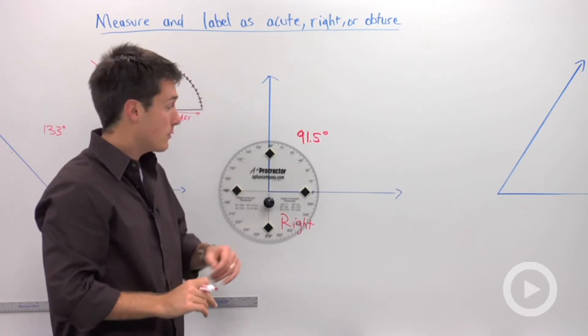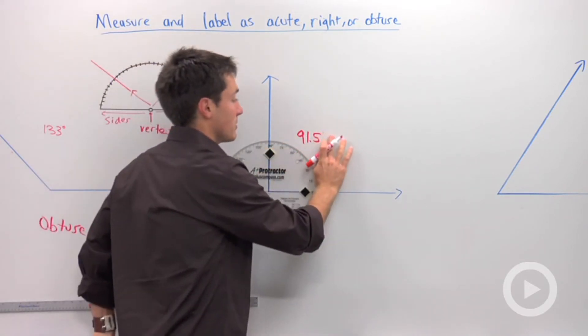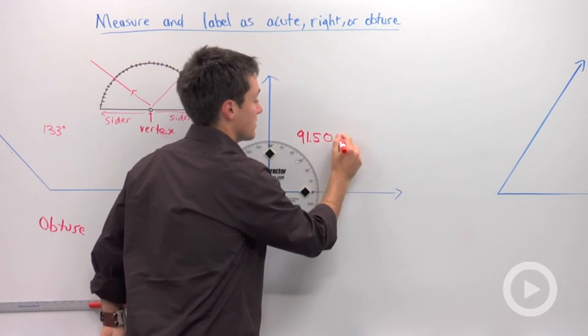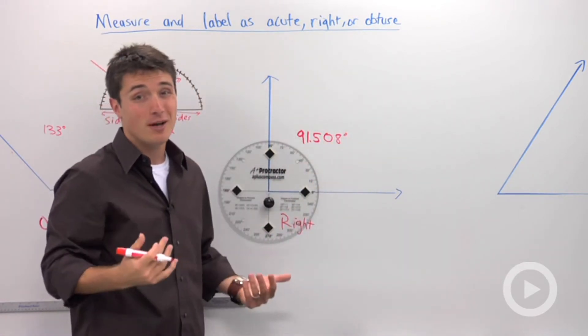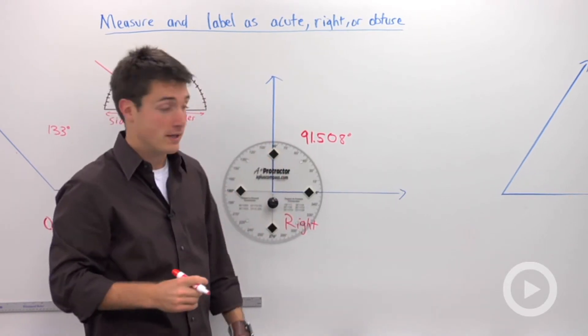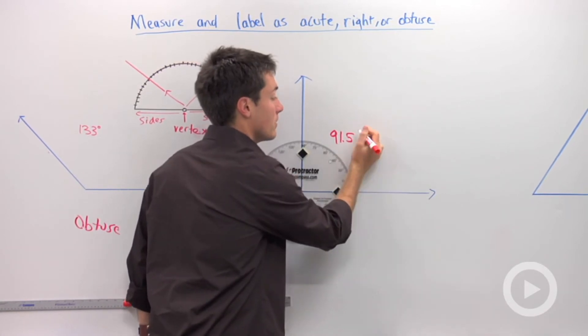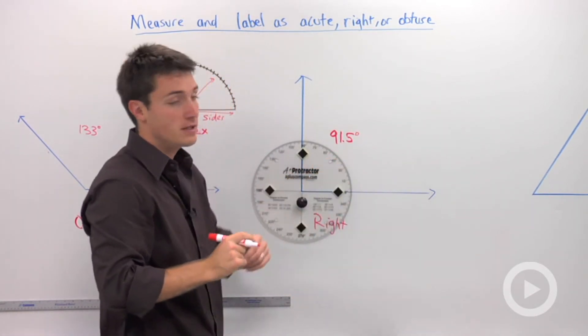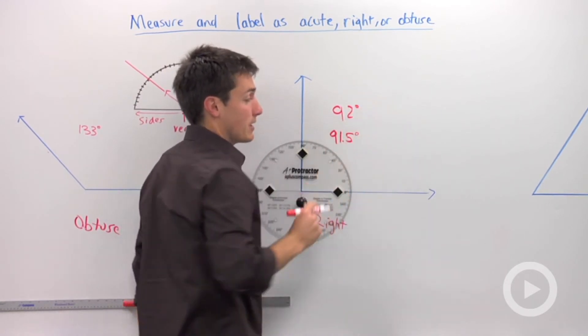Now you're really only going to be able to be accurate to the tenth place. If you come out with a number saying I got this angle that is 91.508 degrees, I'm going to say you don't have enough information on your protractor to go that far out on your decimal place. So I'd say if it's in between, you can make an estimate on your tenth place, but otherwise you can just round this and say that this is about 92 degrees.